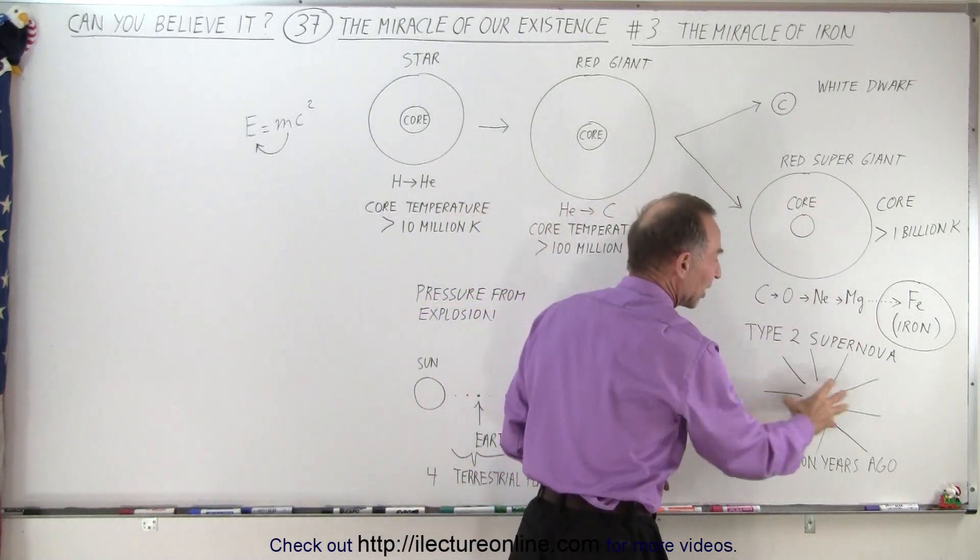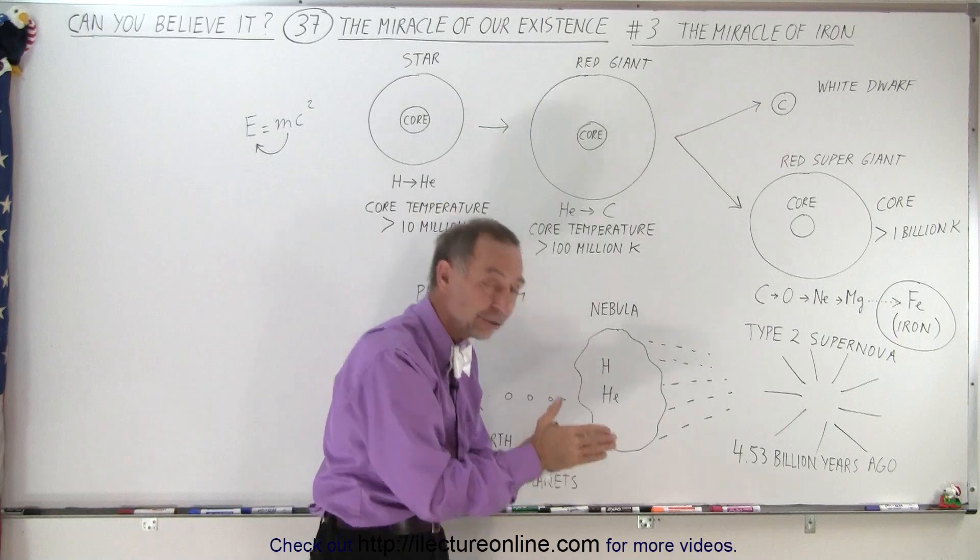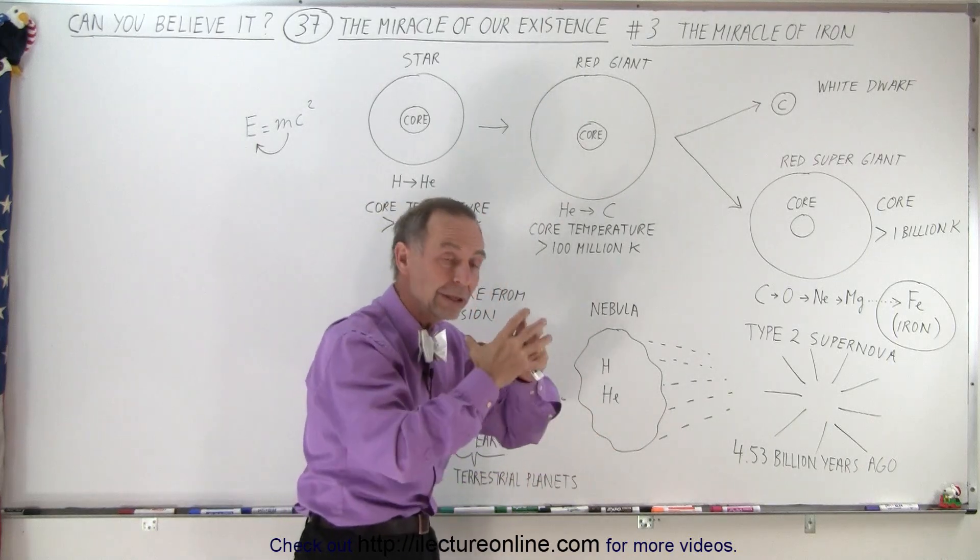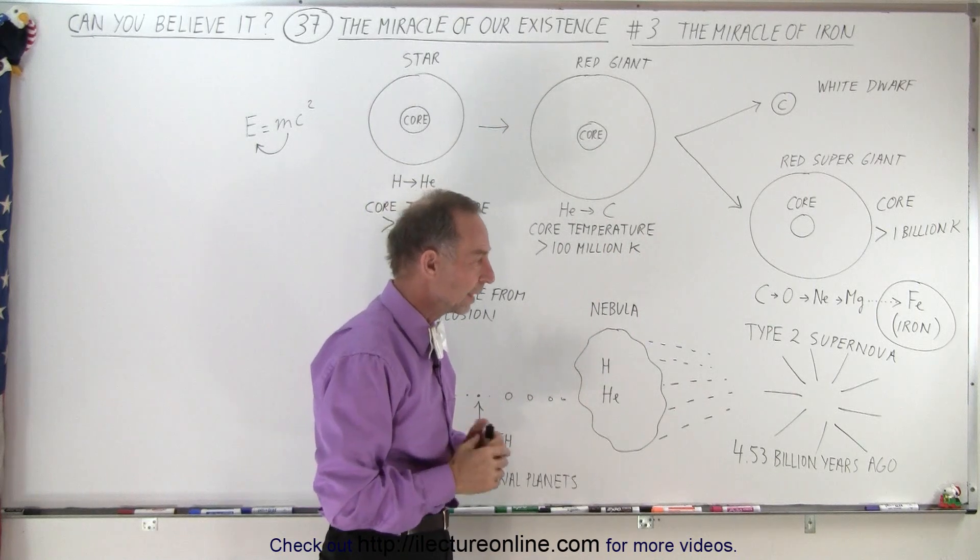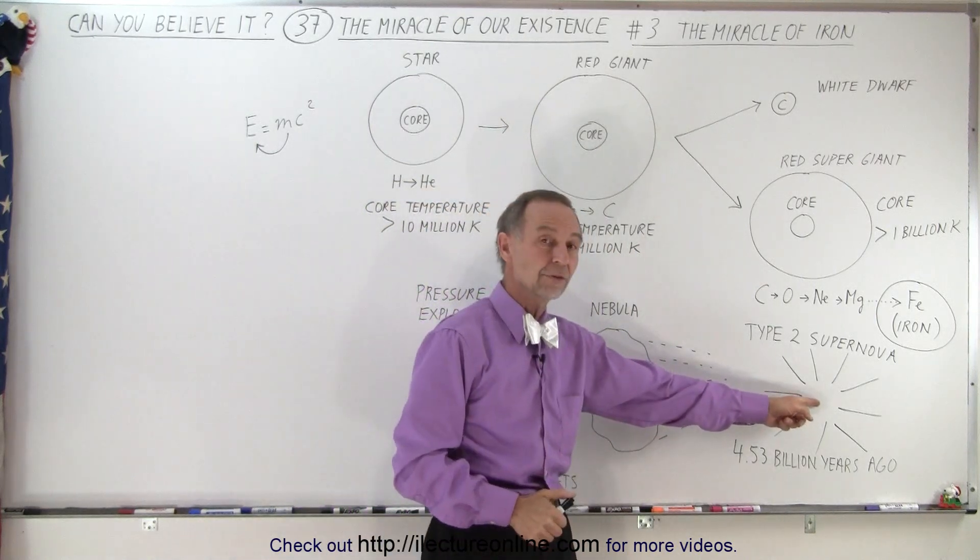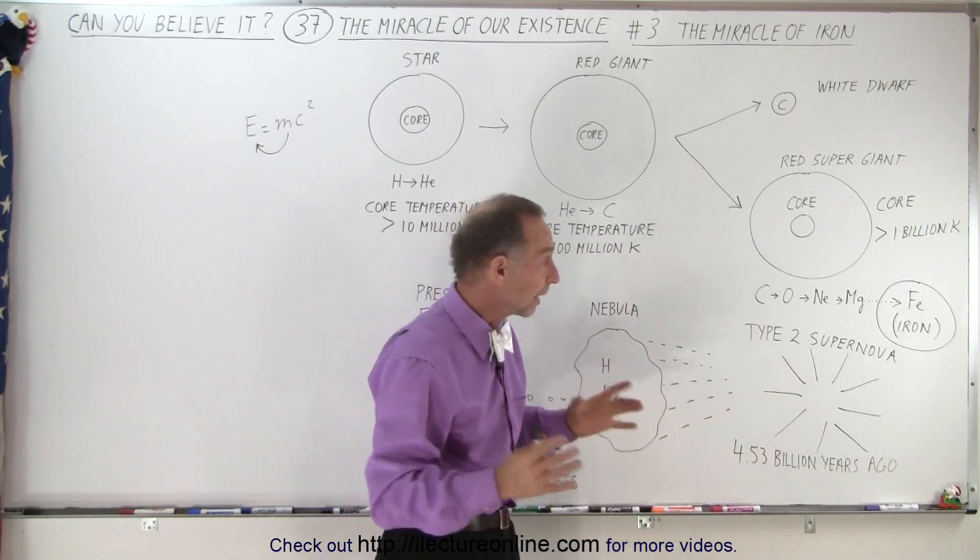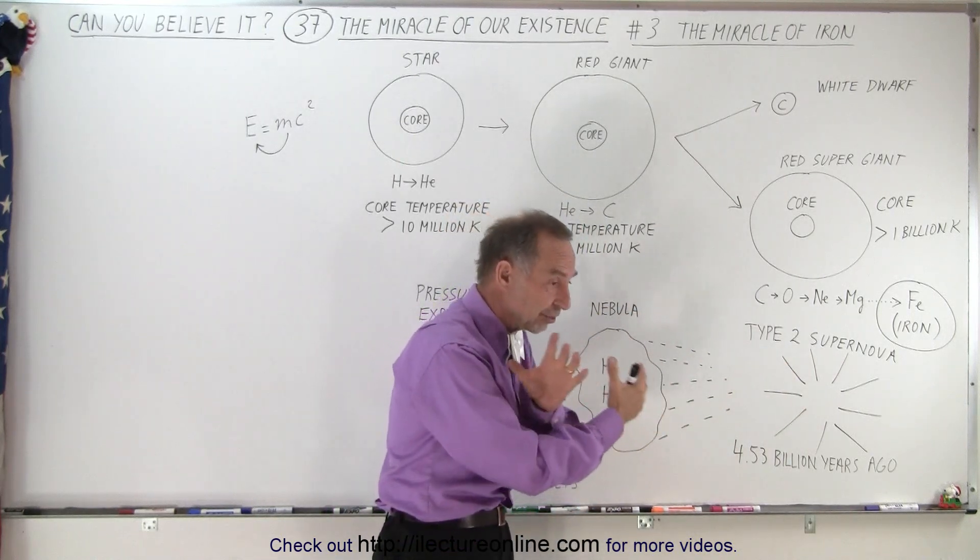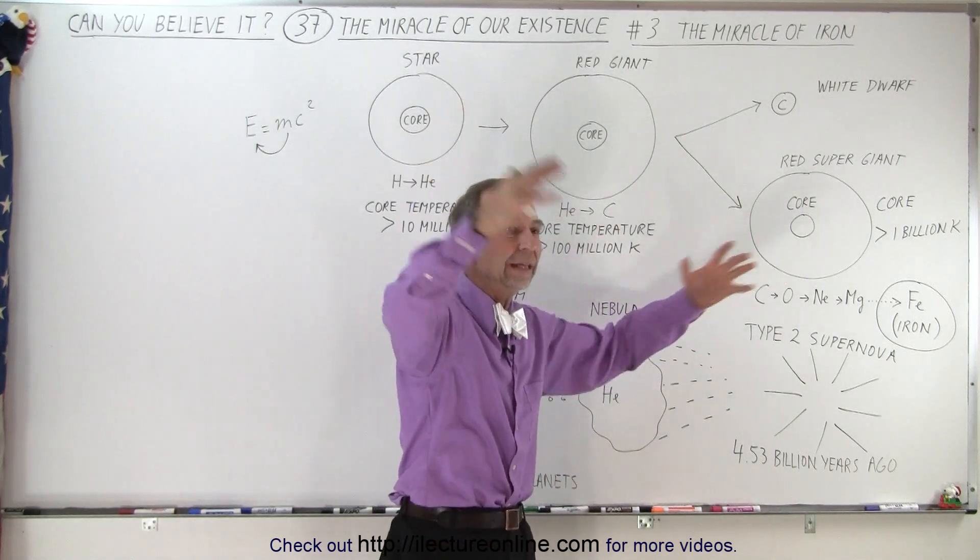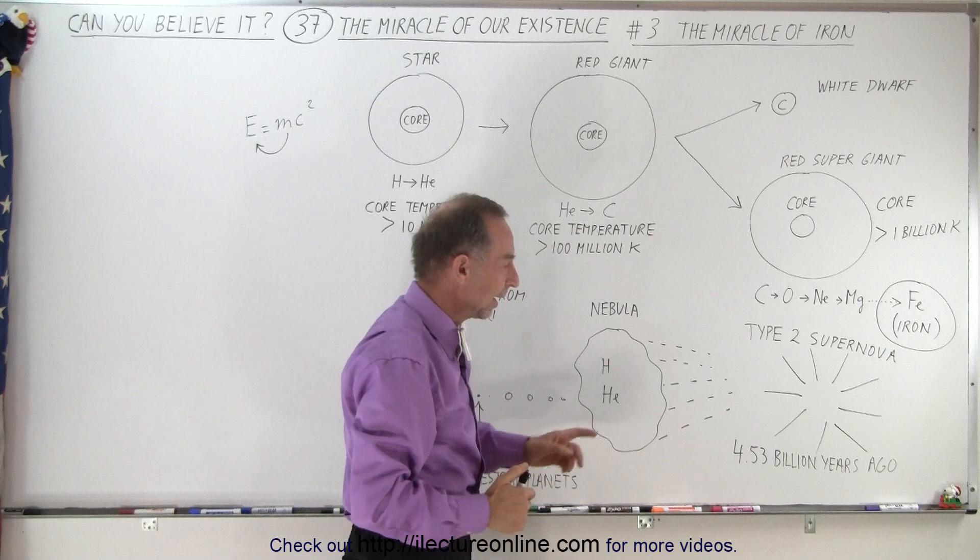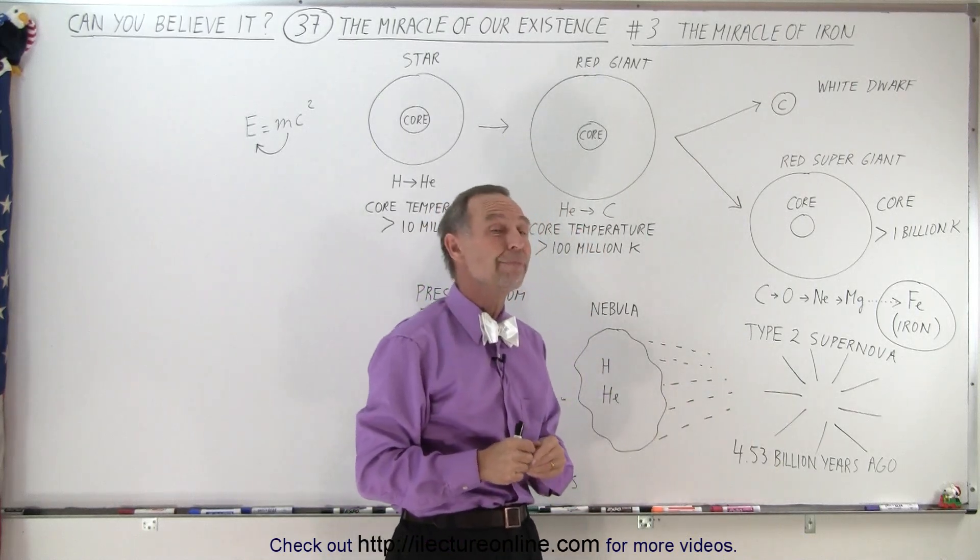In the enormous temperatures generated, the other elements on the periodic table, heavier than iron, are generated within that enormous massive explosion. This is where all the other elements of the periodic table are generated. Nowhere else, there's no other process in the universe that does that. So now we have this massive explosion, and the debris of the star is pushed out into the galaxy, and that happened where we are 4.53 billion years ago.